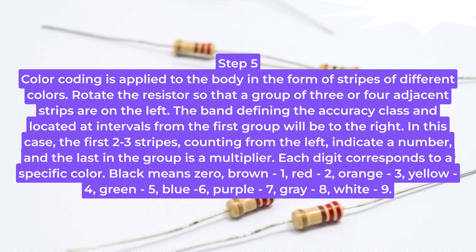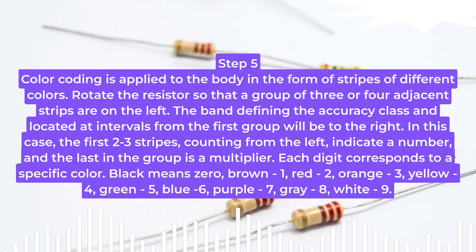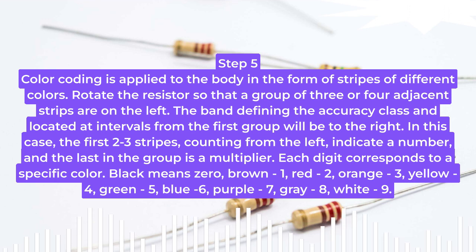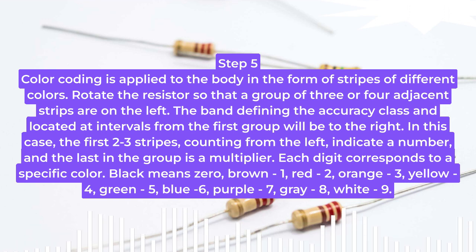Step 5: Color coding is applied to the body in the form of stripes of different colors. Rotate the resistor so that a group of 3 or 4 adjacent strips are on the left. The band defining the accuracy class, located at an interval from the first group, will be to the right. The first 2 to 3 stripes, counting from the left, indicate a number, and the last stripe in the group is a multiplier.